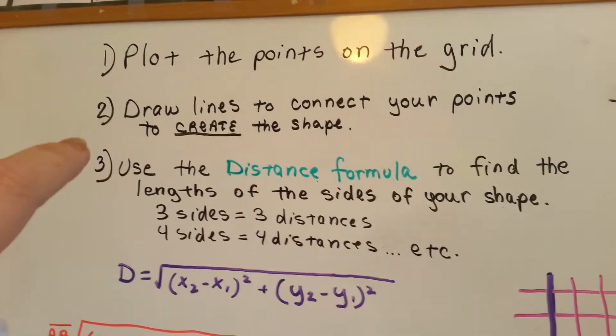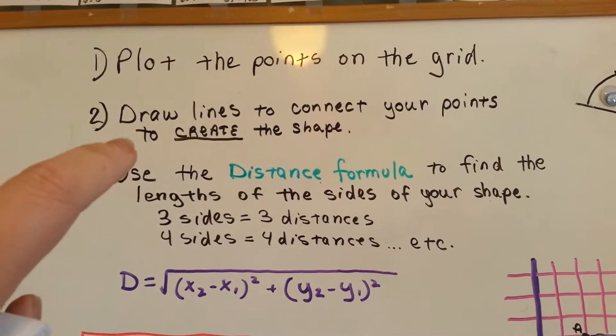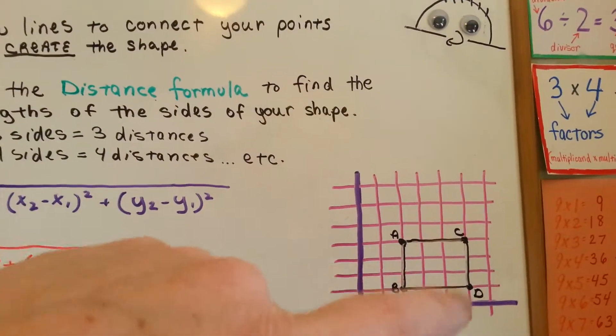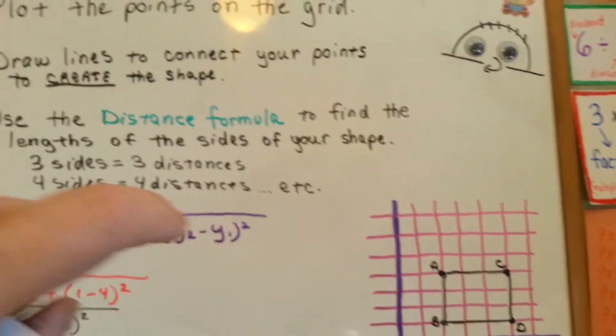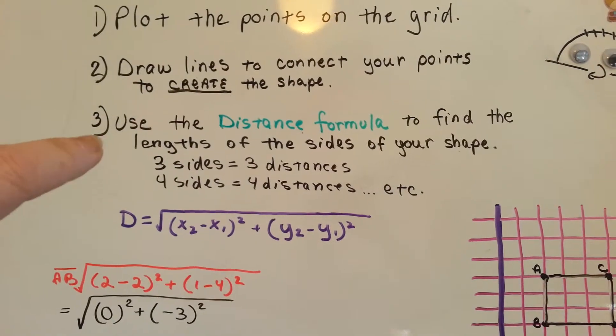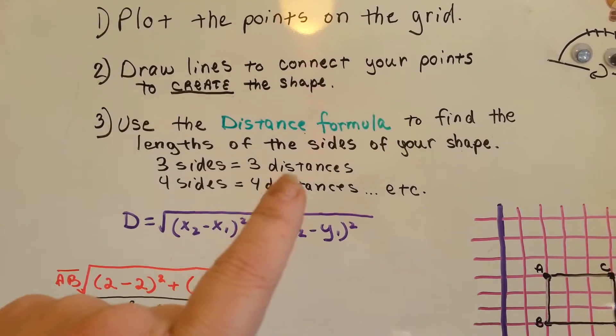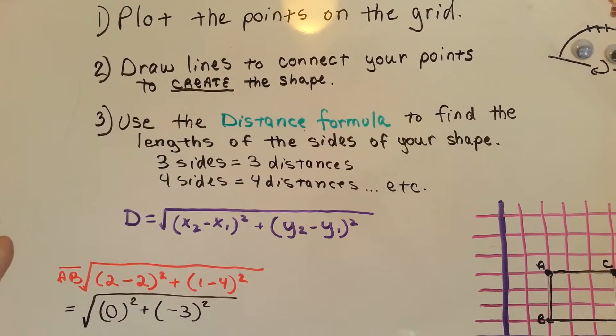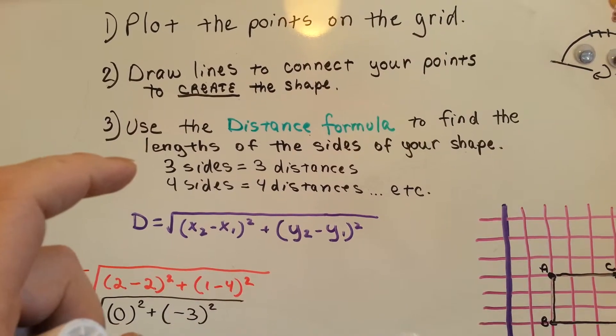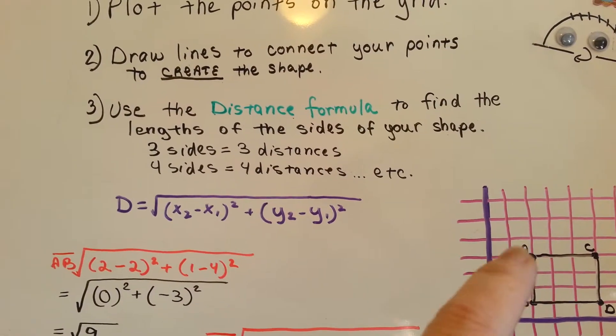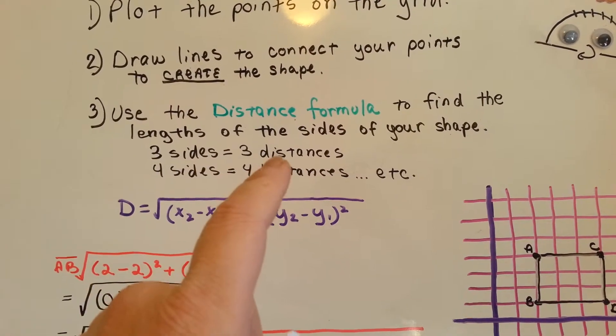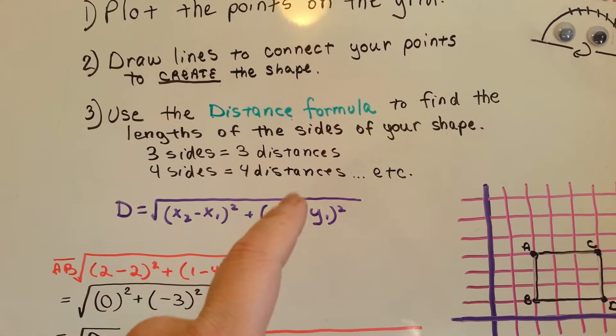The second thing you're going to do is draw lines to connect your points to create the shape. The next thing, number three, is you're going to use the distance formula that we talked about a couple videos ago to find the lengths of the sides of your shape. Three sides means three distances, four sides means four distances, etc.